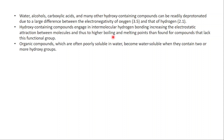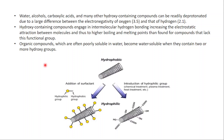Organic compounds that are often poorly soluble in water become water-soluble when they contain two or more hydroxyl groups. In the context of nanomaterials, a nanotube that is hydrophobic can be treated with surfactants that have a hydrophilic head and a hydrophobic tail group to improve its aqueous compatibility.